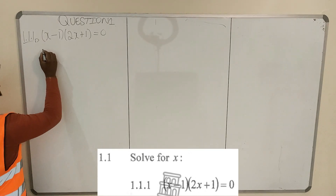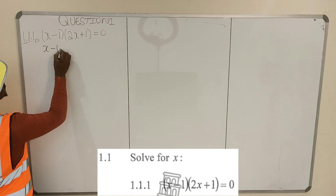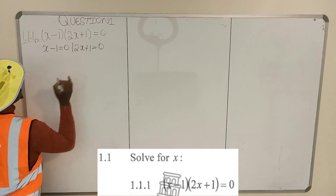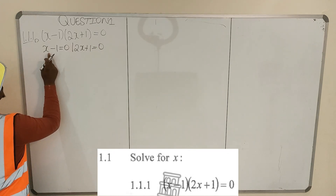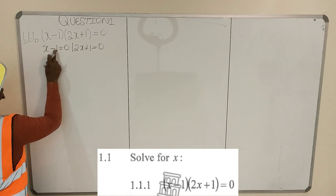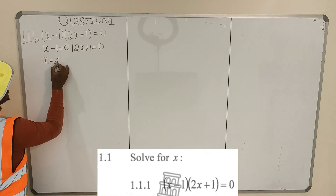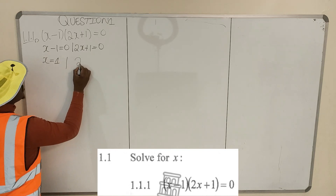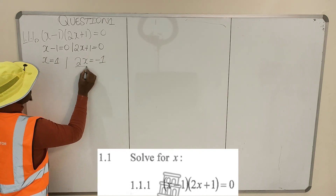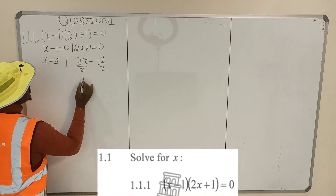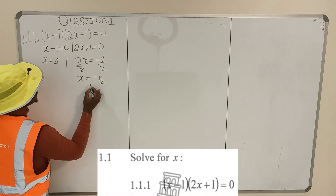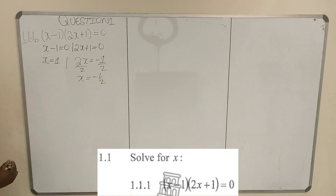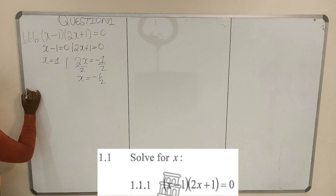If you multiply two brackets and the answer is 0, at least one of them is 0, but you don't know which one. So it's either x minus 1 is equal to 0, or 2x plus 1 is equal to 0. Solving: 2x equals minus 1, divide by 2, so x equals minus 1 over 2. Then we go to the next one.